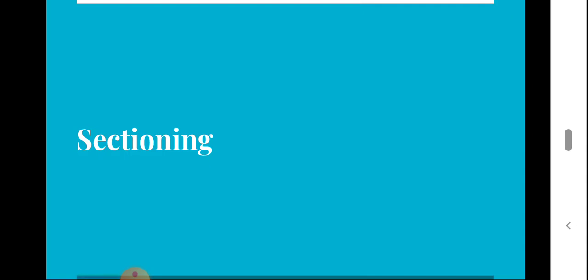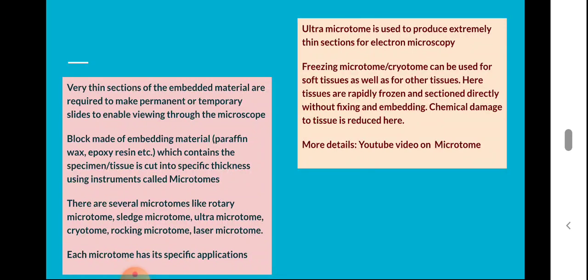Sectioning is the next stage in the histological staining procedure. Very thin sections of the embedded material are required to make permanent or temporary slides to enable viewing through the microscope. These thin sections are needed mainly in the case of tissues, or when we are studying small organisms and want to examine their tissues or different organs.